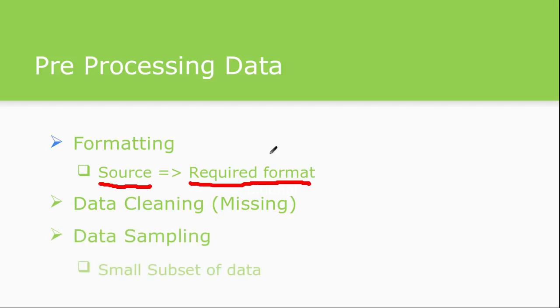Data sampling means taking a very small subset of data rather than using all available data. While prototyping or initially applying different ML algorithms, using a small subset requires much less processing time, less power consumption, and less memory. You can easily prototype with it, and once you are confident it's working fine, you can go for the very large or full dataset available in the complete database.